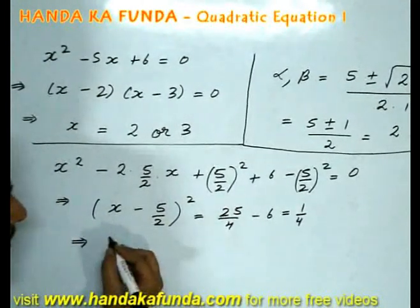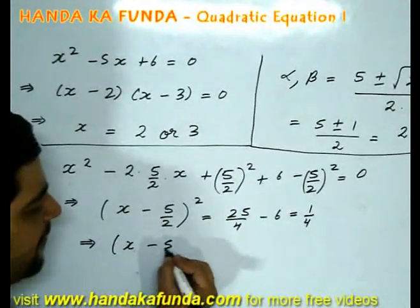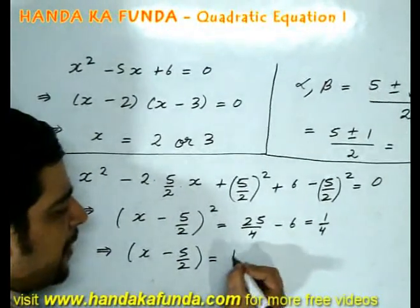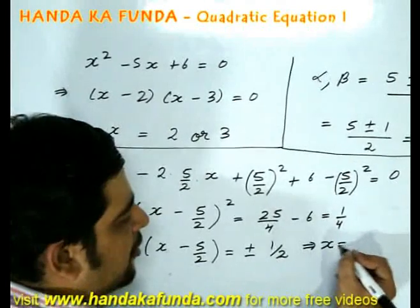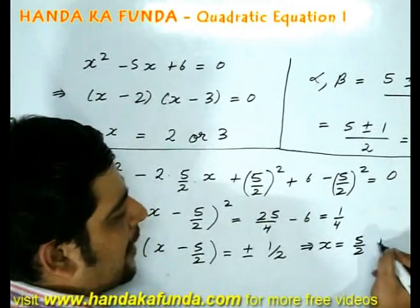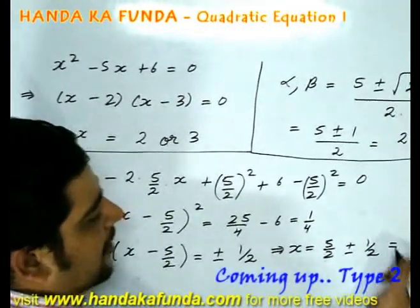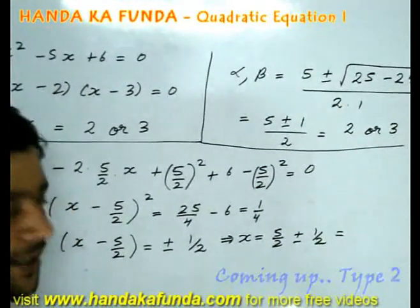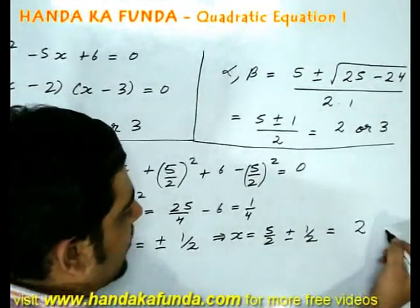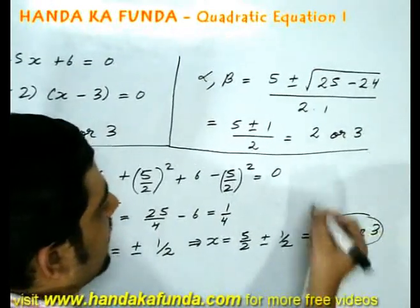Now I will take square root of both sides. I will get x minus 5 by 2 is equal to plus minus half. Which means x is equal to 5 by 2 plus minus half. 5 by 2 plus half is 3. 5 by 2 minus half is 2. Which means once again I can say my roots are 2 or 3.